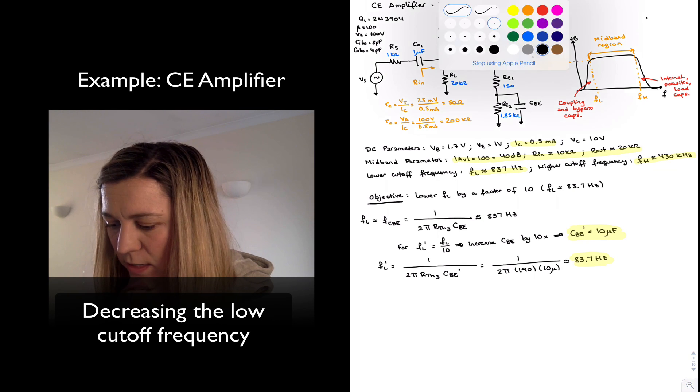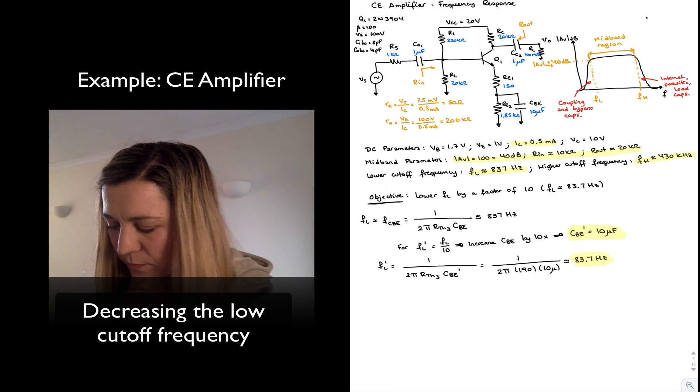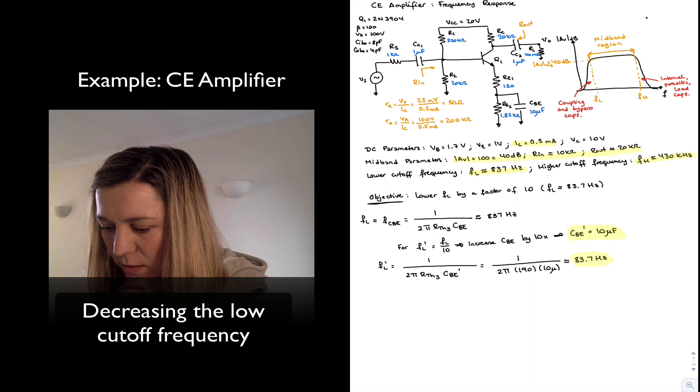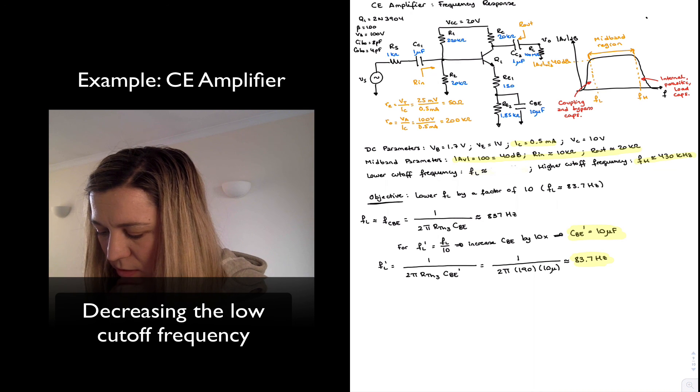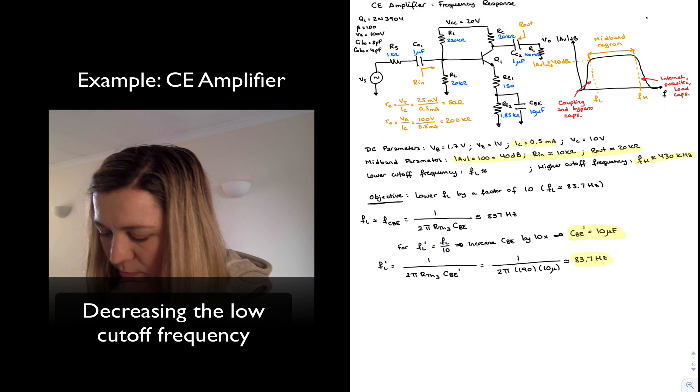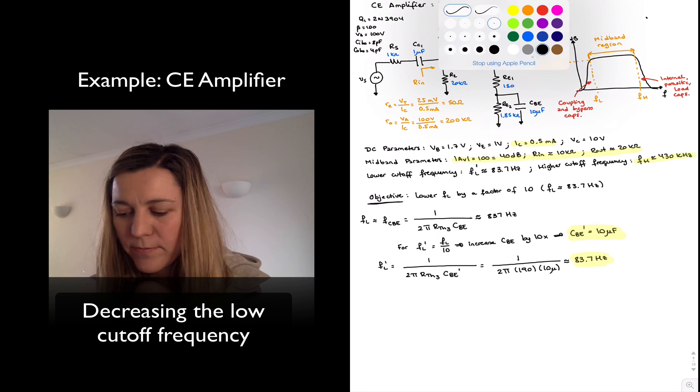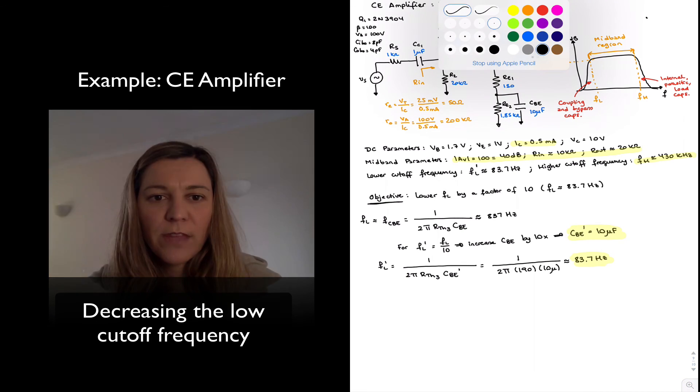And we can go ahead and enter that result into our circuit. So 10 microfarads. And I'll also go ahead and update our FL expression here. Now our FL prime is equal to 83.7 Hz.